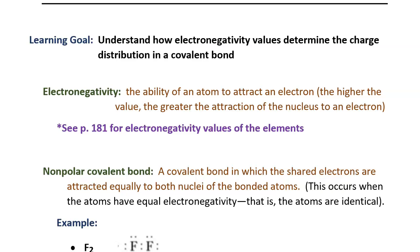Electronegativity is a word that we had earlier this year. It refers to the ability of an atom to attract an electron. The higher the electronegativity number, the greater the attraction of the nucleus to an electron. Page 181 has the electronegativity chart for the elements.